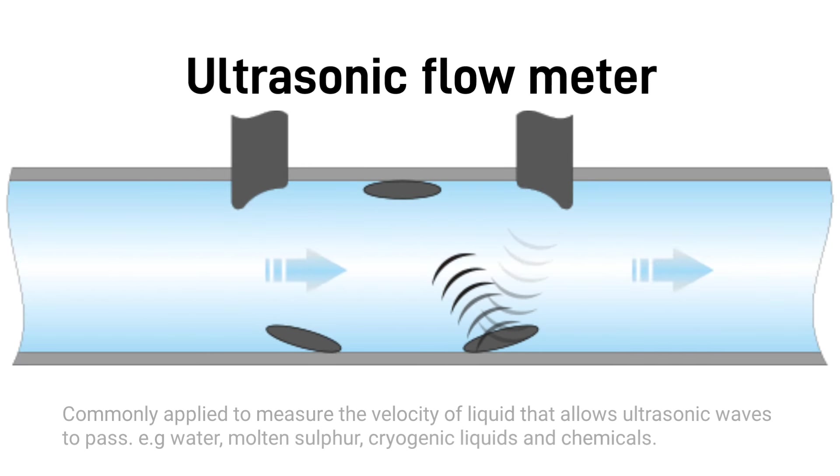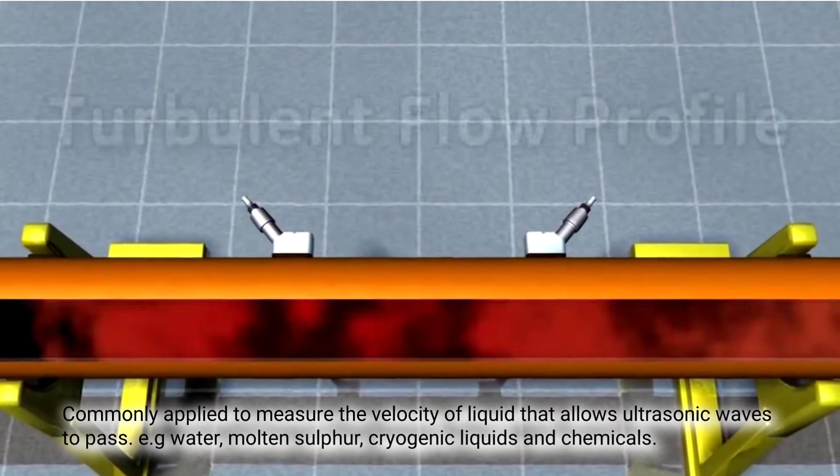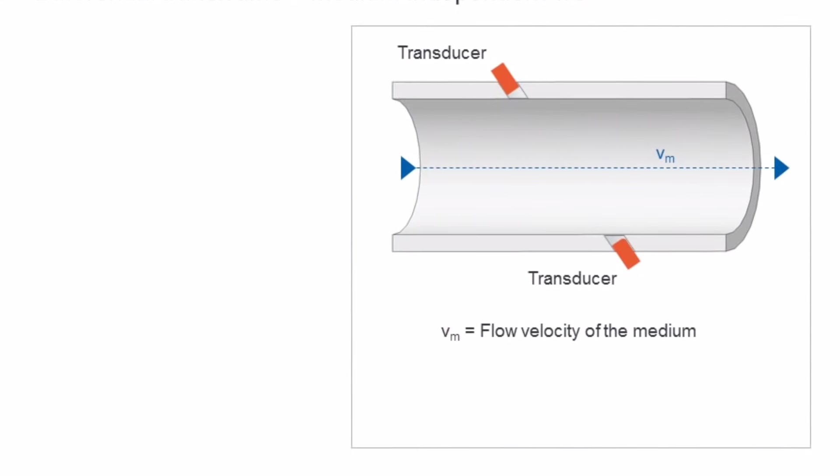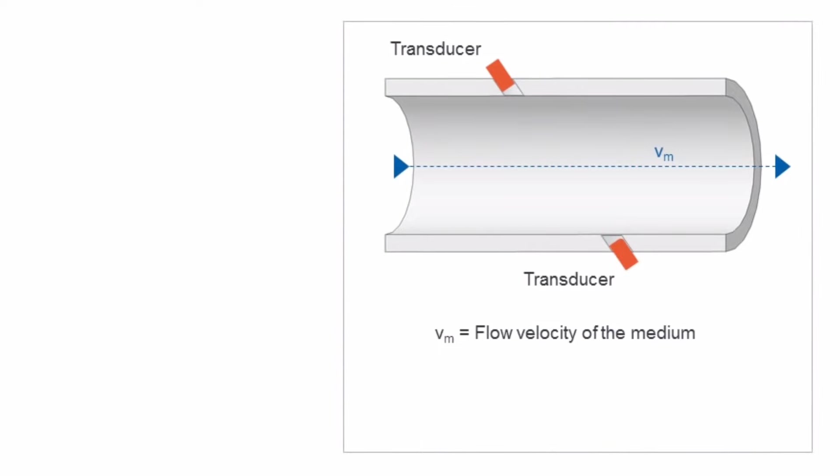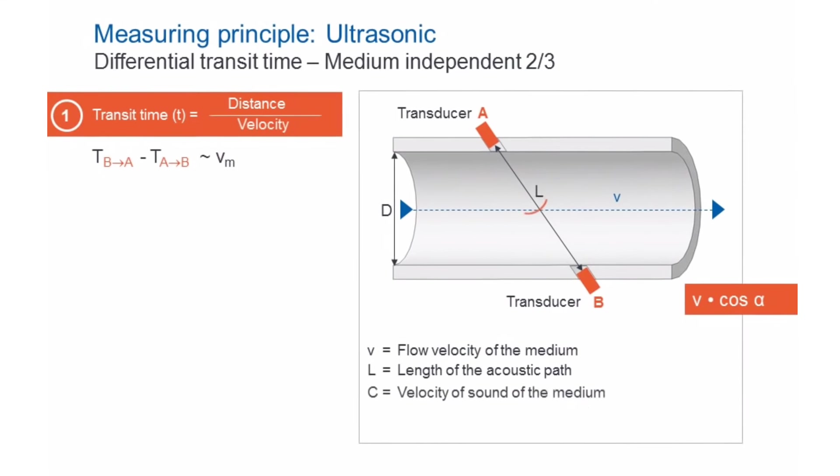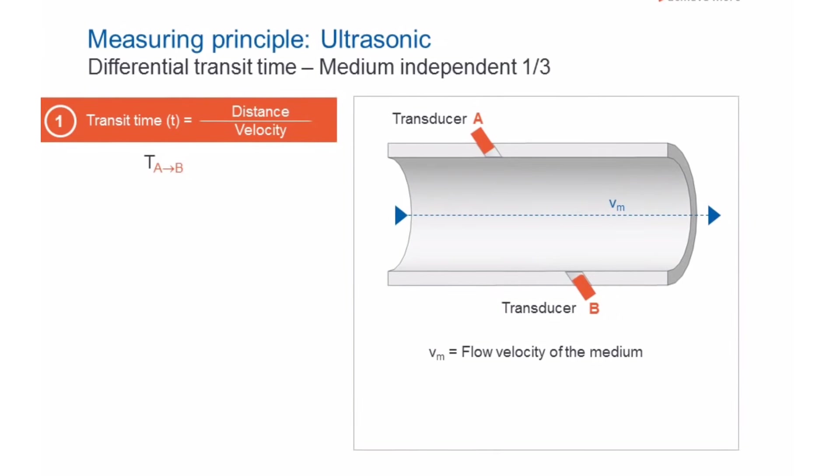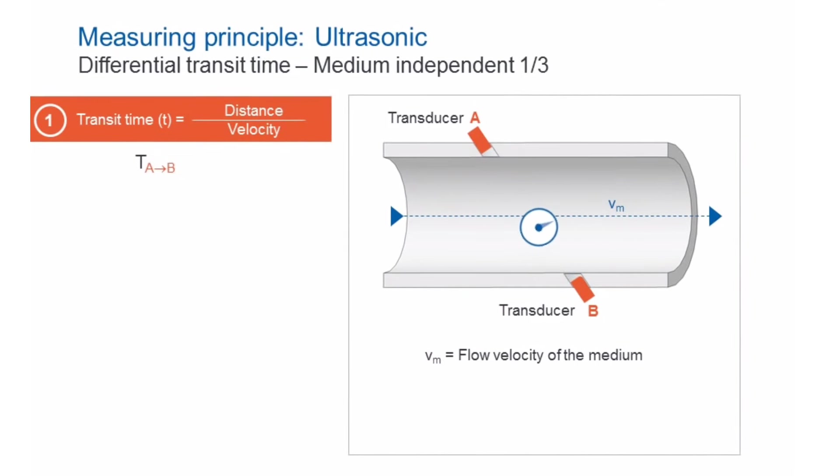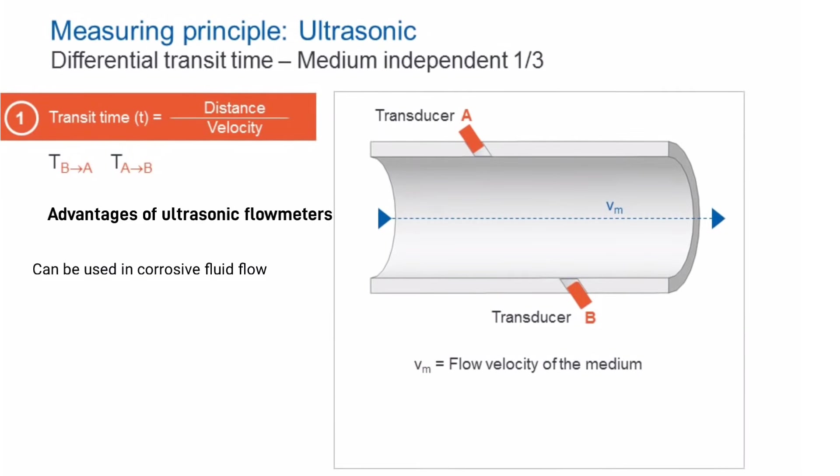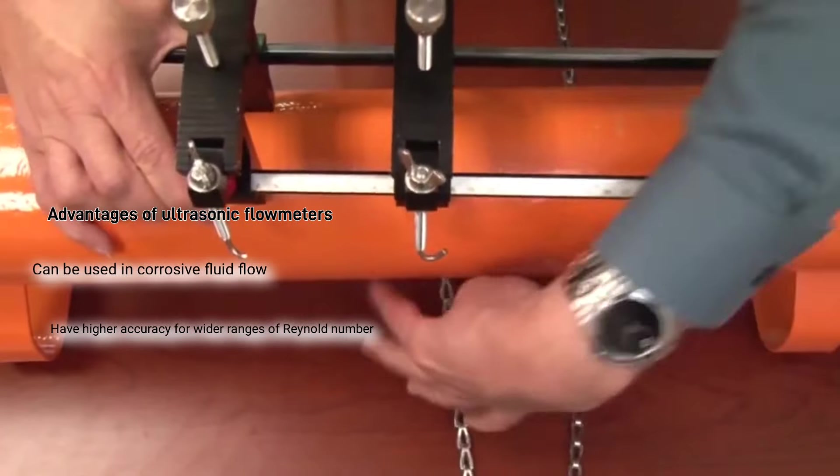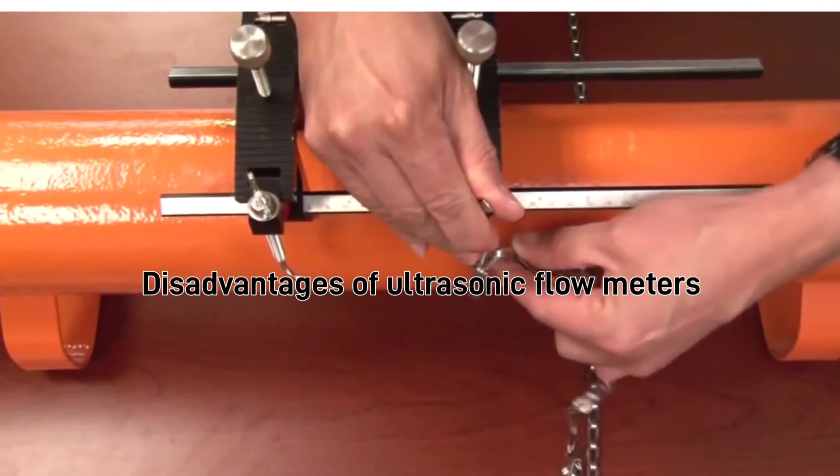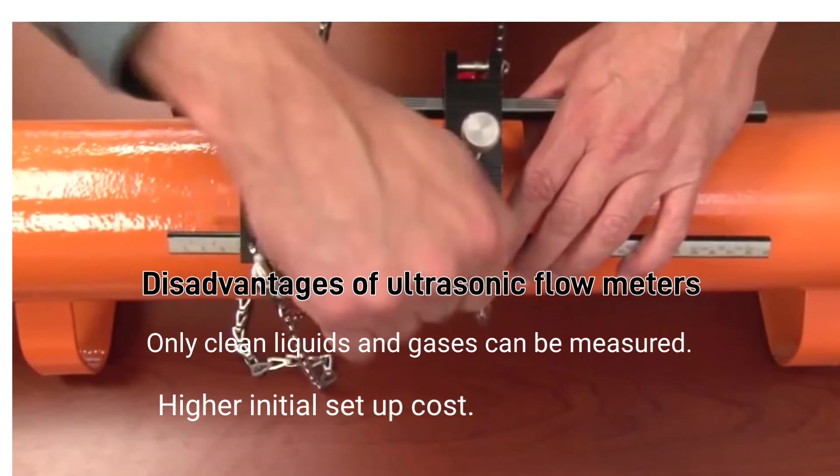Ultrasonic flow meters are commonly applied to measure the velocity of liquid that allows ultrasonic waves to pass, such as water, molten sulfur, cryogenic liquids, and chemicals. A pair of transducers, each having its own transmitter and receiver, are placed on the pipe wall, one set on the upstream and the other set on the downstream. The time for acoustic waves to travel from the upstream transducer to the downstream transducer is shorter than the time it requires for the same waves to travel from the downstream to the upstream. The larger the difference, the higher the flow velocity. Advantages: can be used in corrosive fluid flow, have higher accuracy for wider ranges of Reynolds number, portable models available for field analysis and design. Disadvantages: only clean liquids and gases can be measured, higher initial setup cost.